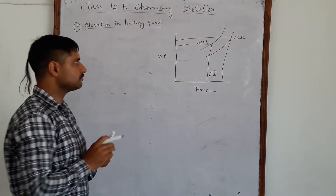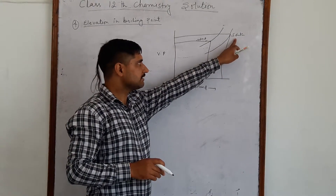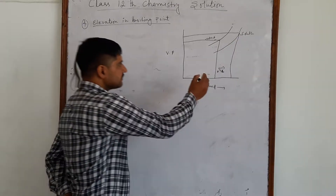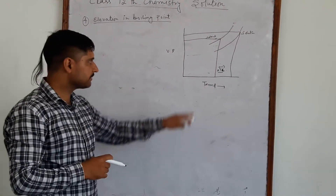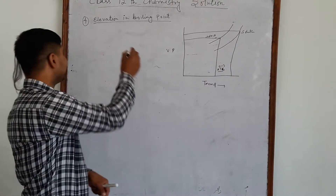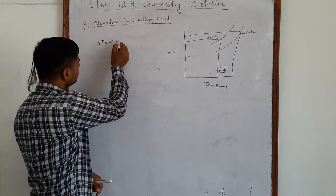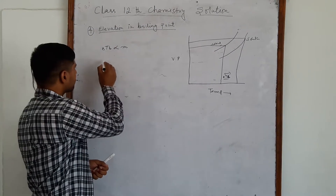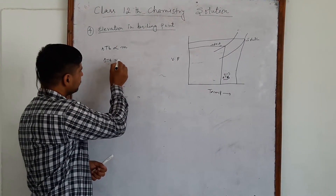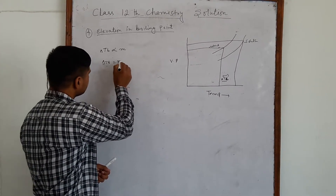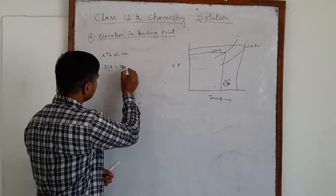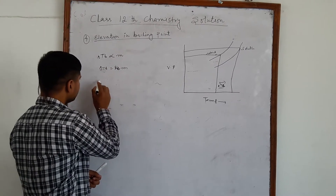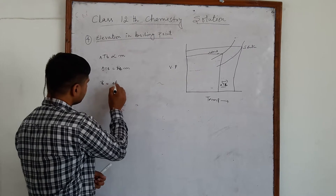In the case of a solution, the vapor pressure increases — or rather, the escaping tendency is less compared to the pure solvent. This change in boiling point is represented by delta Tb, and delta Tb is directly proportional to the molar concentration (molality) of the solute in solution. We can write delta Tb equal to Kb times M, where Kb is called the ebullioscopic constant.